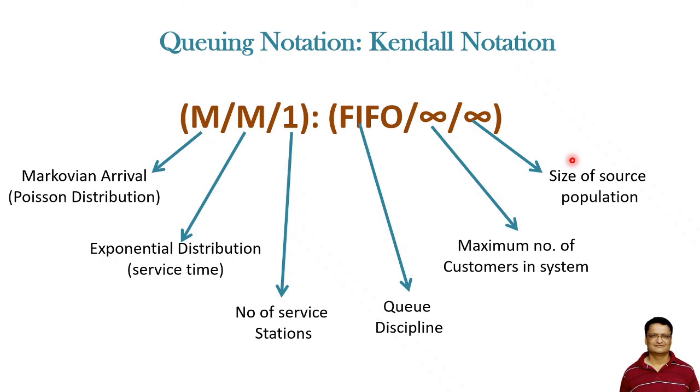Again, if we take the example of a queue formed at a railway station ticket counter, you can always say that the customers are coming from a very large source population. There is no limitation to that.